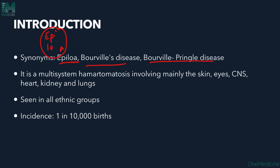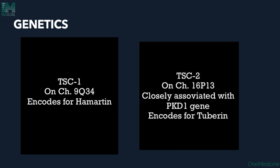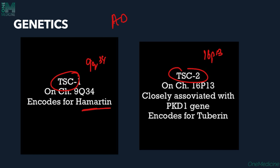Tuberous Sclerosis Complex is a multi-system hamartomatosis involving mainly the skin, eyes, central nervous system, heart, kidney, and lungs. It is called a 'complex' because of this multiple organ involvement. It can affect all ethnic groups; the incidence is 1 in 10,000 births. It carries an autosomal dominant inheritance. Two genes are affected: TSC1 on chromosome 9q34, encoding hamartin, and TSC2 on 16p13, encoding tuberin — a gene closely related to polycystic kidney disease gene 1.